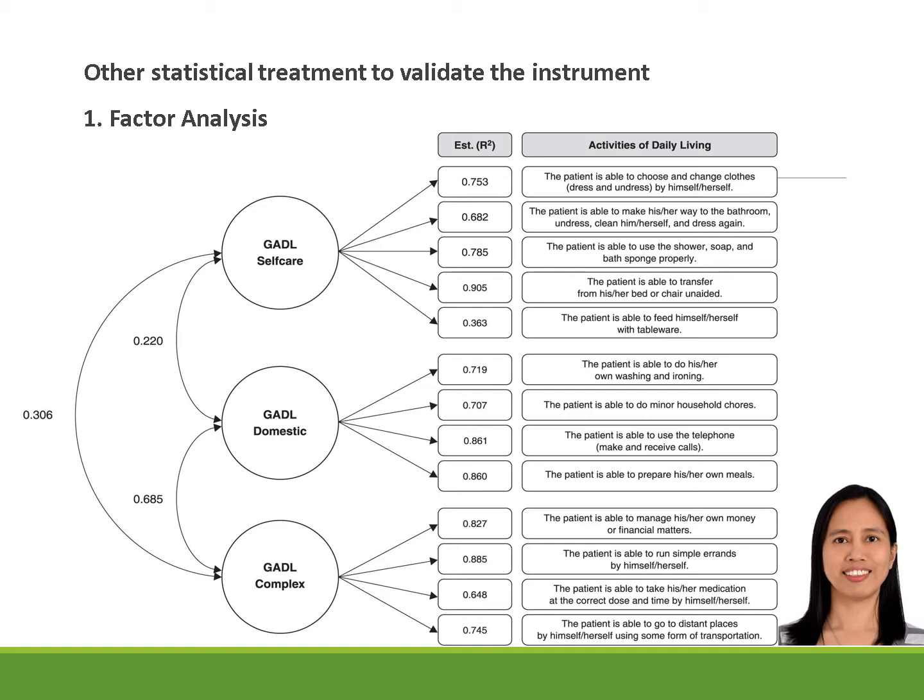Here is another diagram showing other statistical treatments to validate our instrument aside from Cronbach alpha. One of which is factor analysis. Factor analysis is a statistical technique that is used to reduce a large number of variables into fewer number of factors. As you can see in the diagram, the items are deduced into fewer factors.